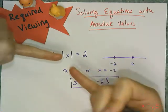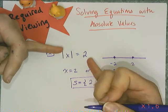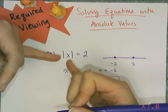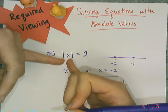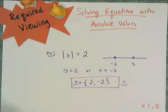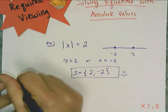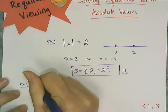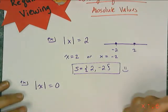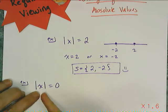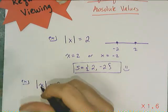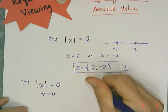One way to solve these is to think about what the equation is telling you. This is telling me that the expression inside the absolute value is either a two or a negative two, because when I took the sign away, the value was two. I need to be careful: if the absolute value of x equals zero — or the absolute value of any expression equals zero — there's only going to be one answer, and that answer is x equals zero.